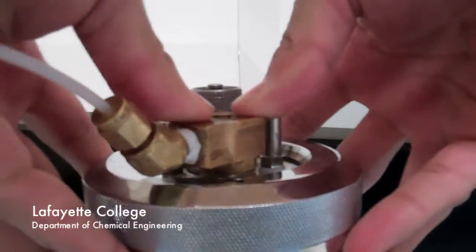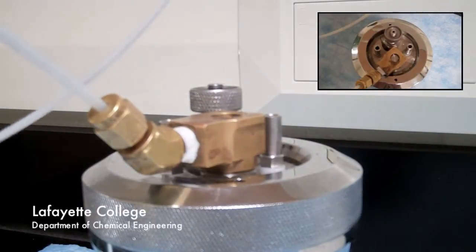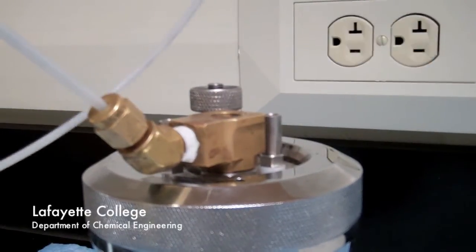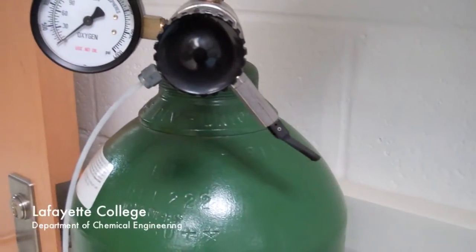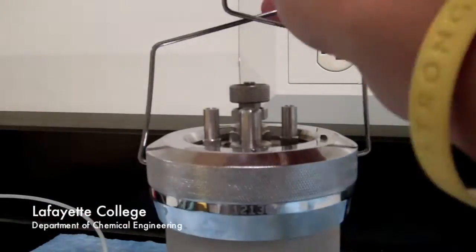It is very important the pressure does not exceed 40 atm. If it does, depressurize the bomb with the gas release valve and start over. Once the bomb has been pressurized, release residual oxygen in the hose by opening the valve attached to the hose.